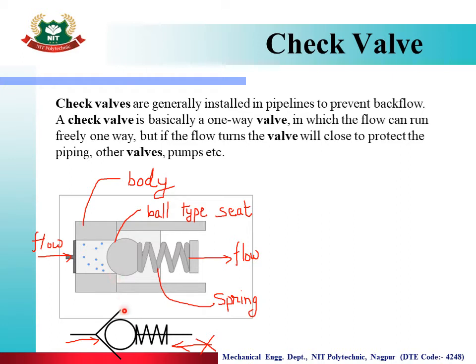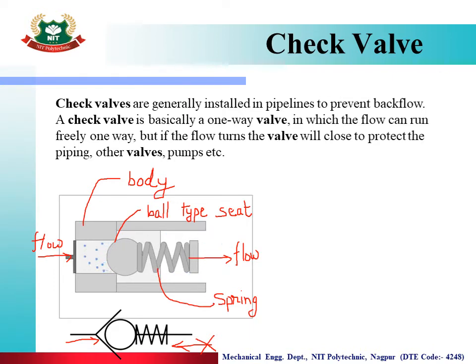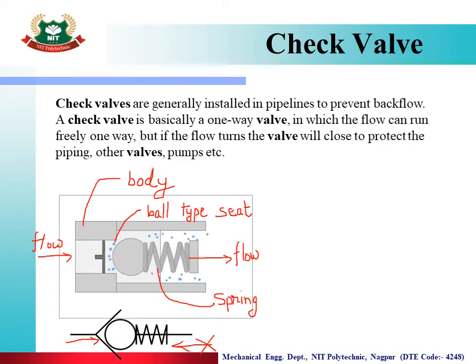This is the symbol of a check valve with an integral spring. Here a spring is used. In the symbol, here is the arrow showing the allowed flow direction, and here is the arrow showing the opposite direction where flow is blocked.